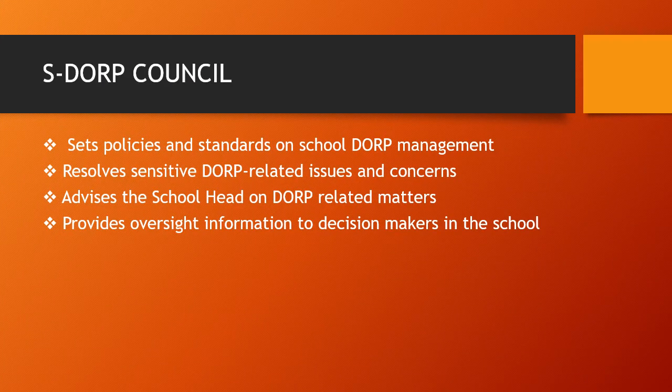What is the role of the school DORP council? It sets policies and standards on school DORP management. It resolves sensitive DORP-related issues and concerns. It advises the school head on DORP-related matters. And lastly, it provides oversight information to decision makers in the school.